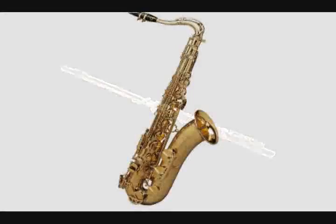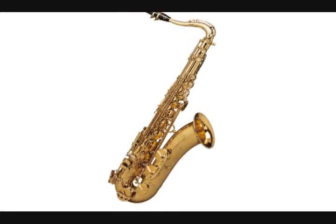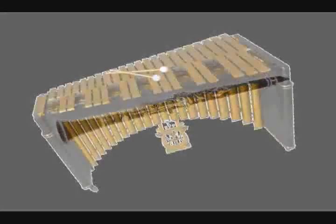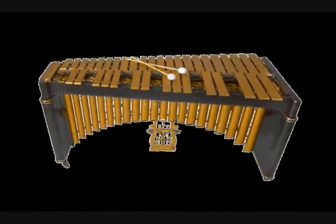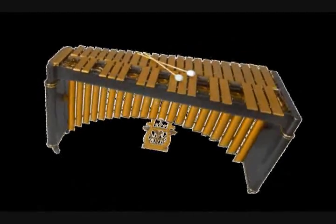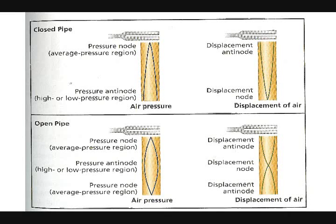Open pipe resonators include flutes and saxophones. Clarinets and xylophones are examples of closed pipe resonators. A resonating tube with one end closed to the air is called a closed pipe resonator. An open pipe resonator is a resonating tube with both ends open that also will resonate with the sound source. A seashell acts as a closed pipe resonator to amplify certain frequencies from the background noise.